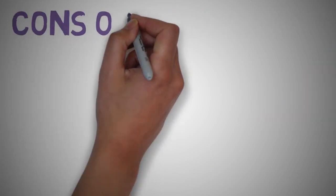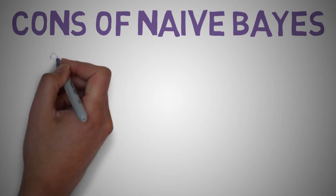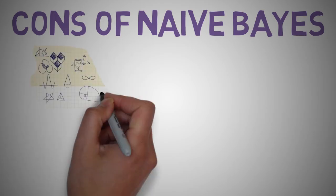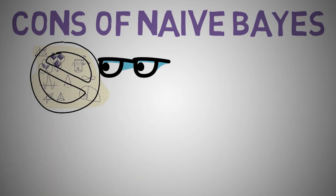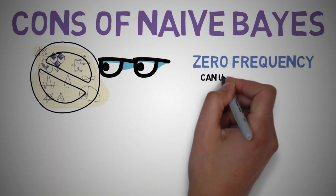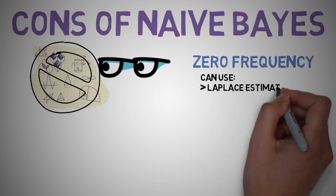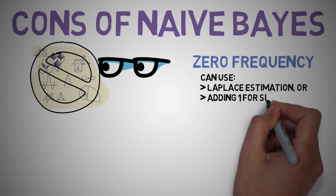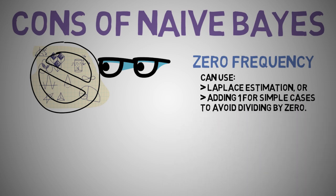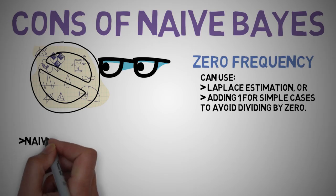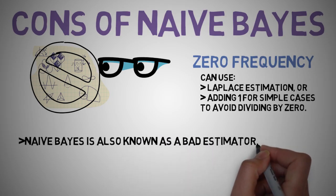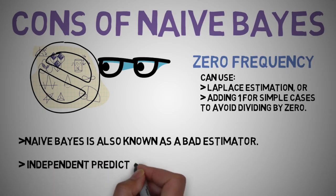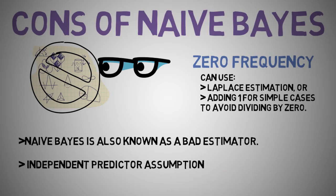Looking at the disadvantages: if a categorical variable has a category in a test dataset which was not observed in the training dataset, then the model will assign a zero probability and will be unable to make a prediction. This is often known as zero frequency. To solve this, we can use smoothing techniques, and one of the simplest is called the Laplace estimation — in some cases you can just add 1 to avoid the algorithm dividing by zero. On the other side, Naive Bayes is also known as a bad estimator, so the probability outputs from the predicted probabilities are not taken too seriously. Another limitation is the assumption of independent predictors — in real life, it is almost impossible to get a set of predictors which are completely independent.